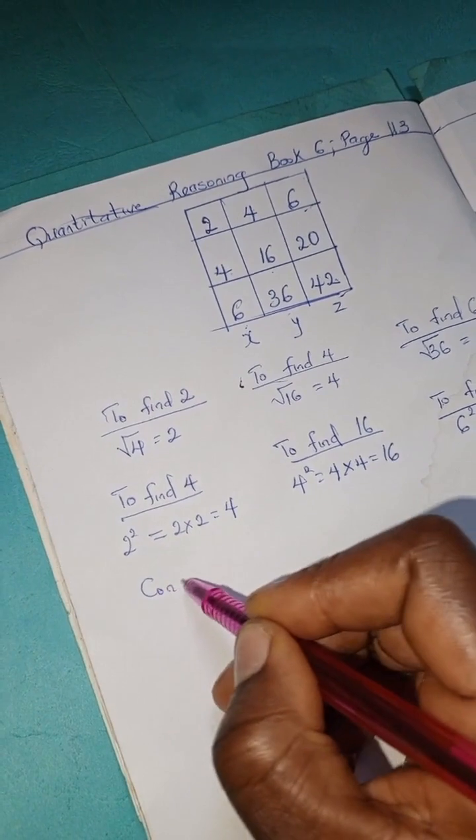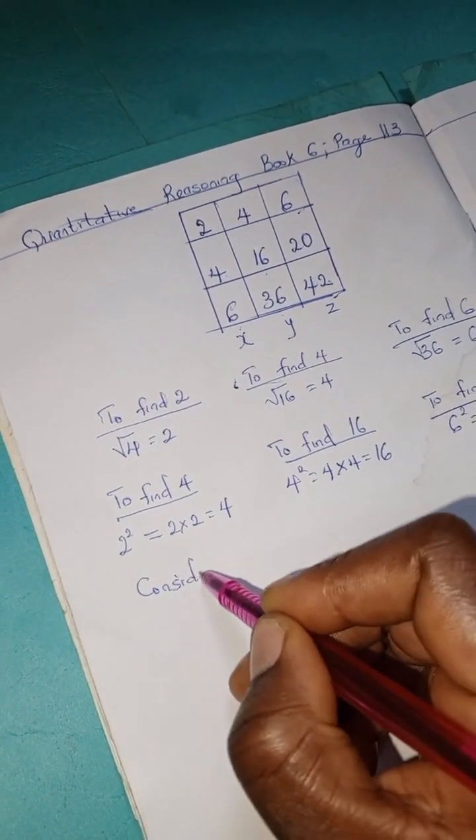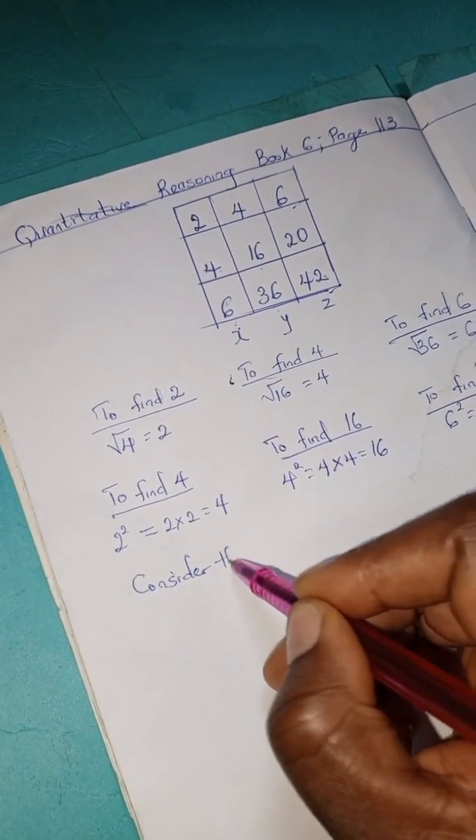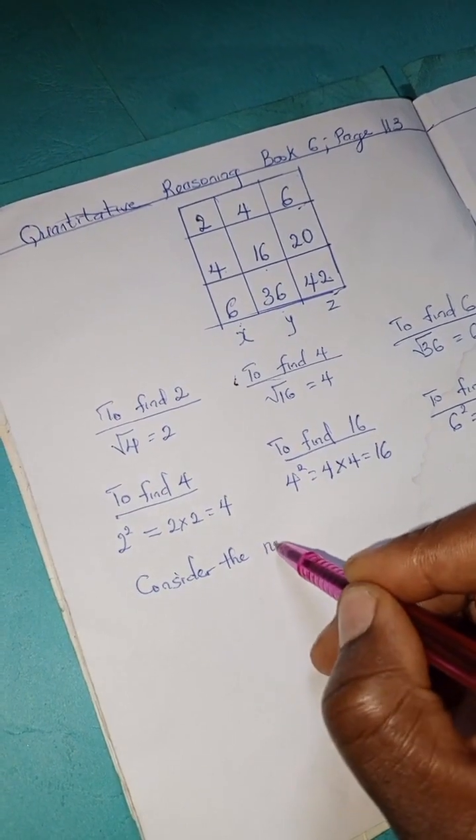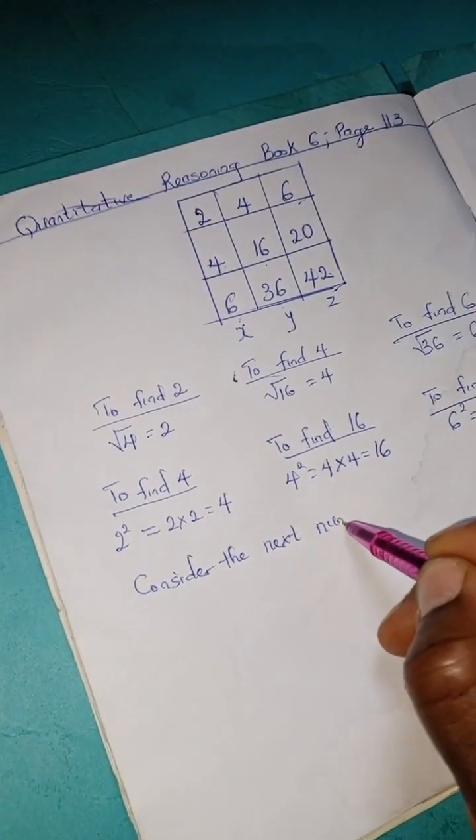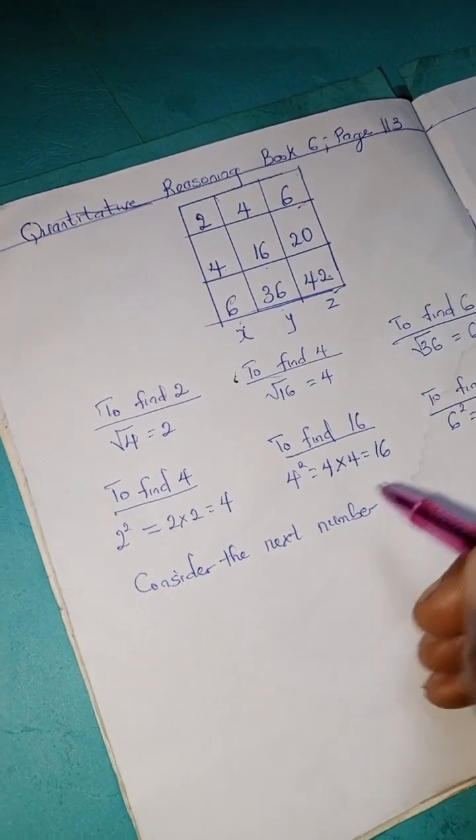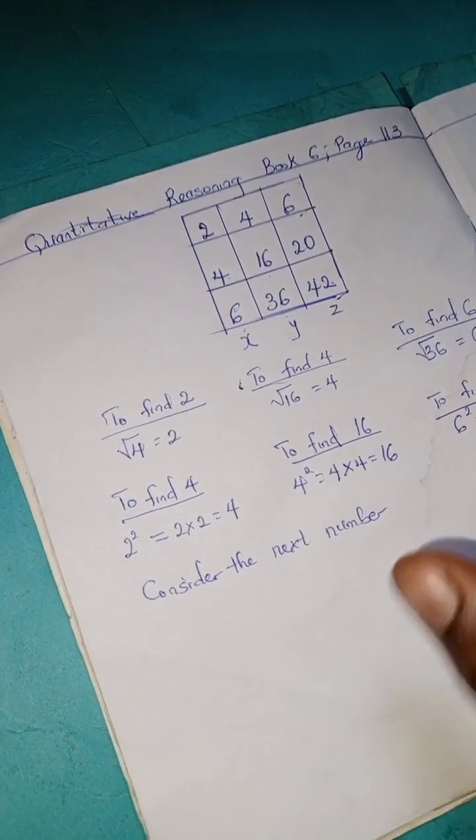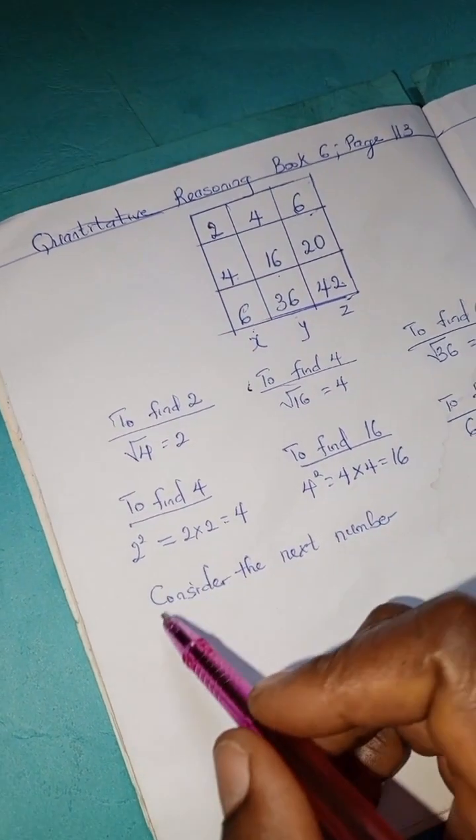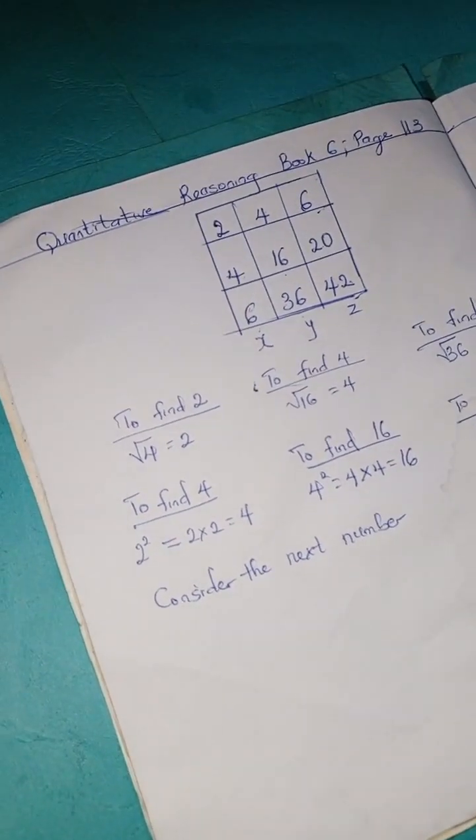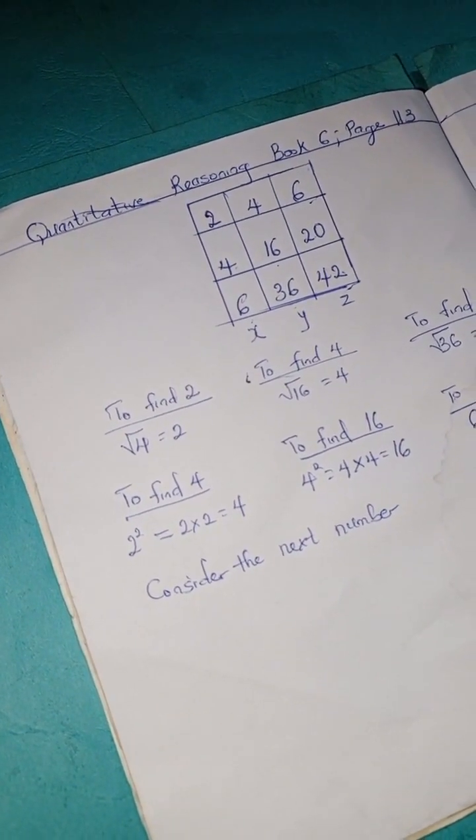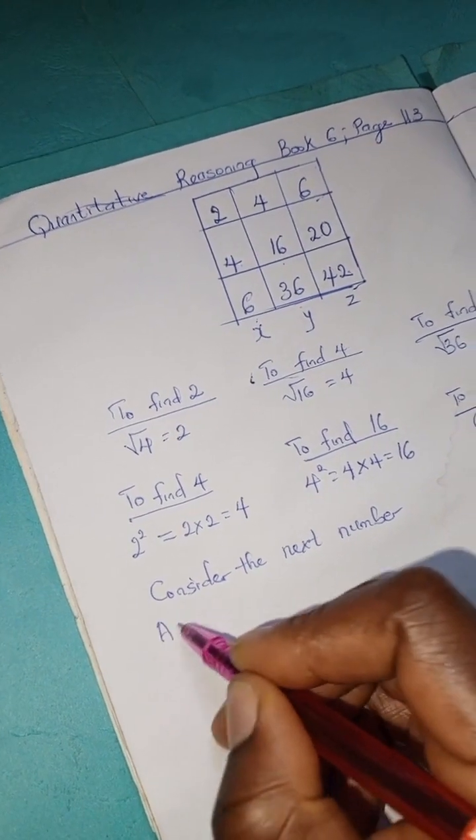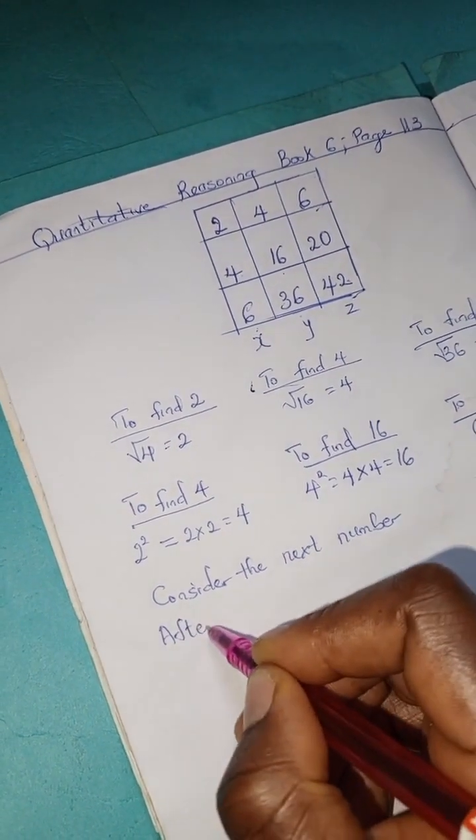To find that number, we're going to consider the next number after the first column X. Right, so if we have 2 there, what will be the next number after 2 is 3, so we're going to multiply 2 by 3.